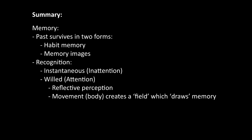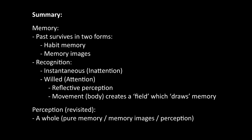The second form of recognition was willed recognition or recognition through attention, where we looked at reflective perception and the diagram tracing how we go from perception into memory and draw out the appropriate memory. The key point: movement creates a field which draws the memory out — it's a bodily idea, we are fundamentally embodied and our bodies play a pivotal role in recollection. Finally, we revisited perception through the second diagram and saw that pure memory, memory images, and perception are a whole — though the past is a difference in kind from the present.